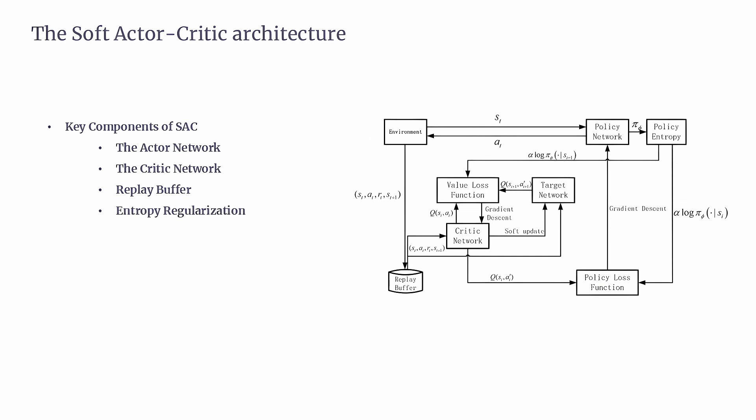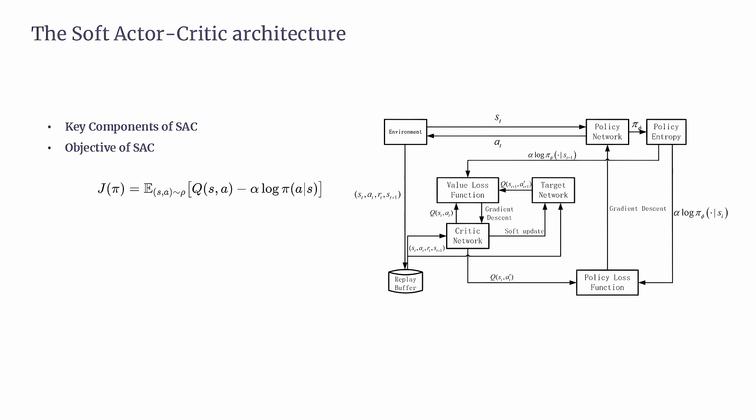The fourth component is Entropy Regularization — here's where SAC really stands out. It includes an entropy term in its objective function, which encourages the policy to keep its options open by maintaining some randomness in its actions, avoiding the trap of settling too early on a suboptimal strategy. The objective of SAC can be expressed as a formula where Q(S,A) is the value the critic assigns to a state-action pair, pi represents the policy's action probabilities, and alpha is a parameter that adjusts the balance between prioritizing rewards and keeping the policy exploratory. By maximizing this function, SAC ensures the agent seeks high rewards while staying curious about other possibilities.